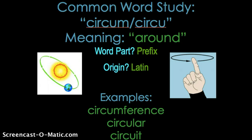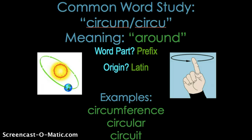The second word I want to introduce today is circular. Circular is an adjective that describes anything that has a round shape, where you could have a distance around something. The word circle is a name for a shape that has a circular shape around it, so circular would describe anything that is in the shape of a circle.